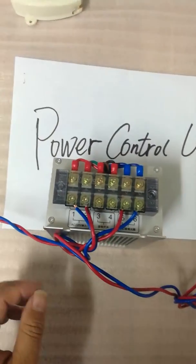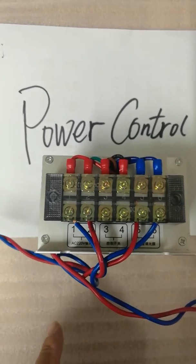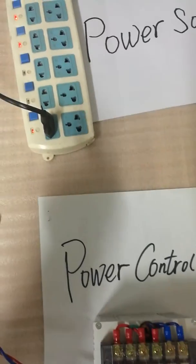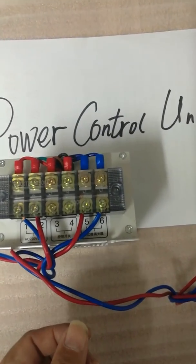You see, there is terminal 1 and terminal 2. Connect this 1 and 2 to power source, and connect terminal 5 and 6 to smart glass.